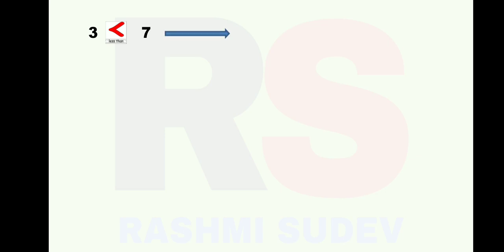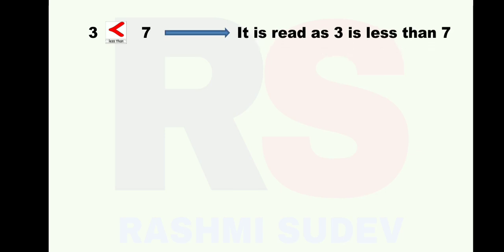3 and 7 are the given numbers. We have put a sign of less than. How are you going to read this sum? It is read as: 3 is less than 7.